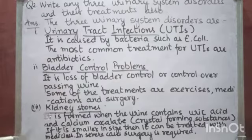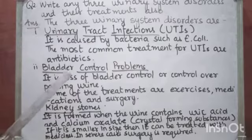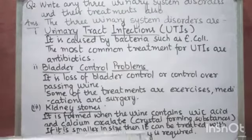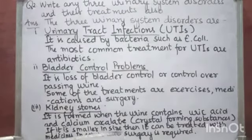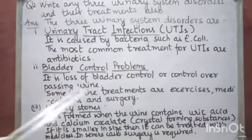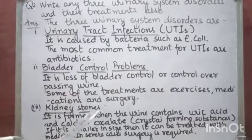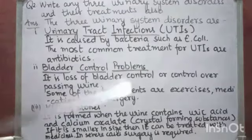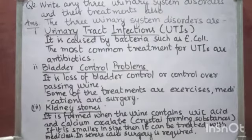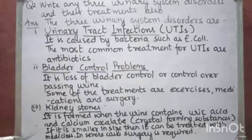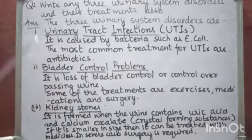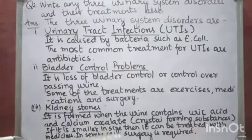The third one is kidney stones. Kidney stones are stones that form in the kidney or in the urinary system. They are formed when the urine contains uric acid and calcium oxalate, which are crystal-forming substances. When they are excess in the urine, the urine starts forming crystals. If the stone is smaller in size, it can be treated through medications, but if it is big or in severe cases, surgery is required.